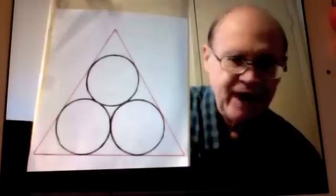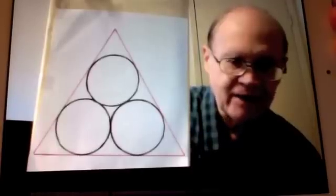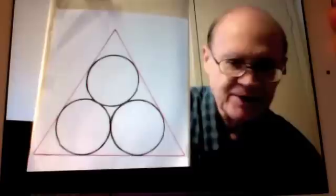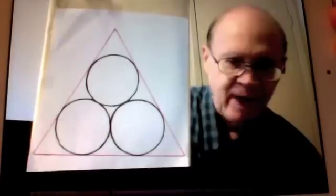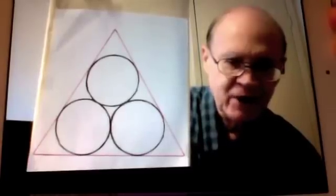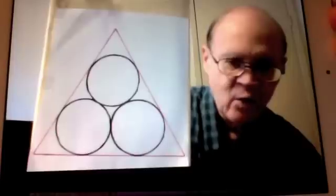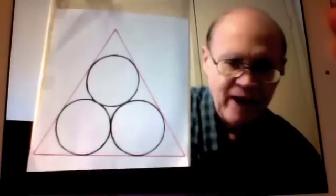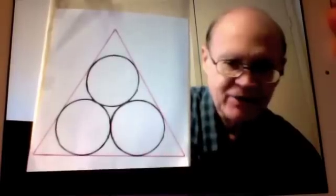Suppose that the length of each side of the triangle is n units. My question is, in terms of n, what is the exact length of a radius of any of the circles?